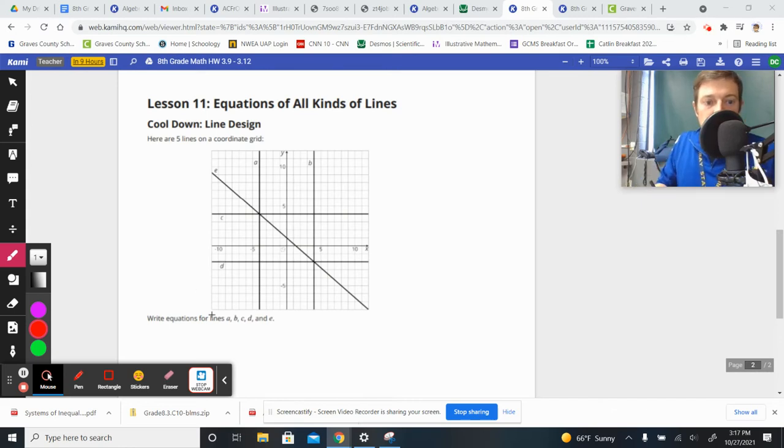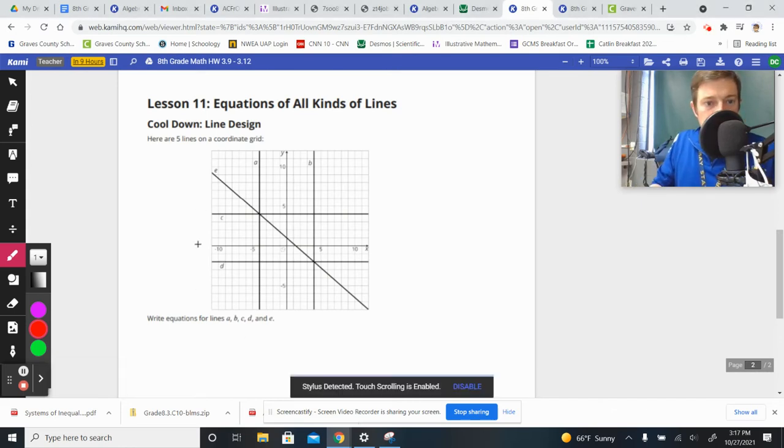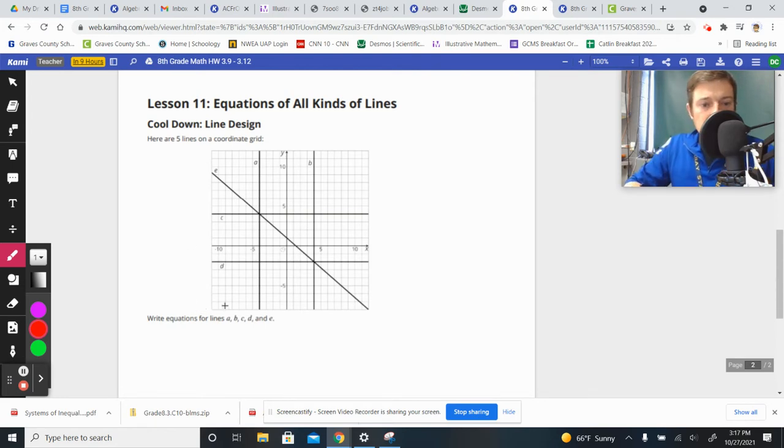Hey, 8th graders, Catelyn here with your cooldown help for Lesson 11 here in Unit 3. We've got five lines on this grid, and we've got to write an equation for each. Let's jump into it.